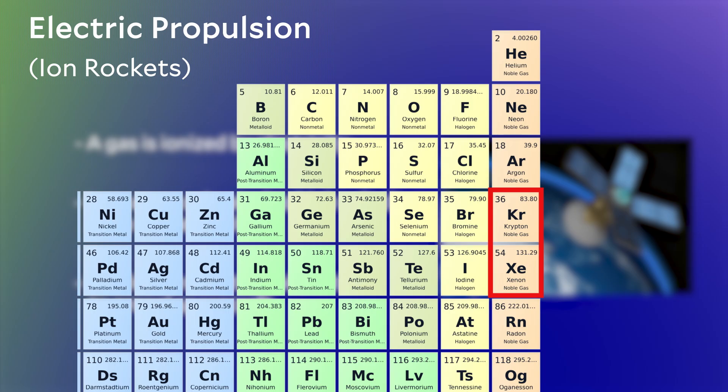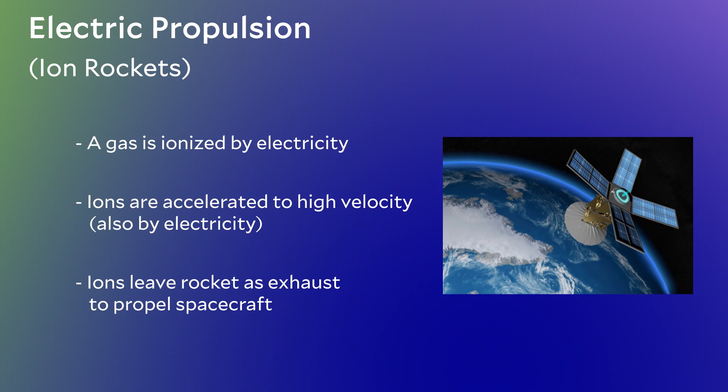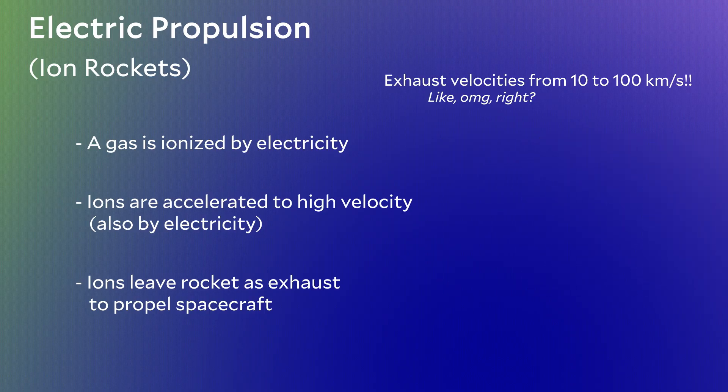Once an atom is ionized and accelerated, it's possible to get exhaust velocities up to 100 kilometers a second. Like OMG, right? This is so much larger than our puny chemical rockets that have exhaust velocities of two or four kilometers a second. A hundred kilometers per second exhaust velocity is crazy, but there's a catch.